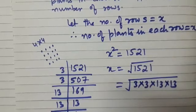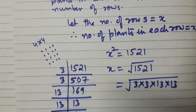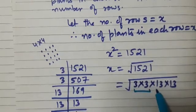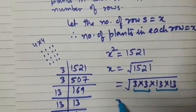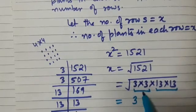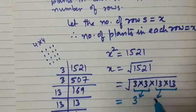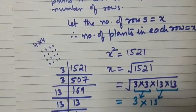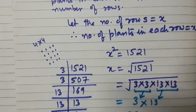So, what will be the square root? We make pairs of the same numbers, and then for writing the square root, we take out one from each and find the product. So, 3 into 13, that is 39.